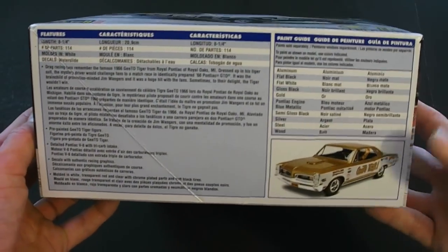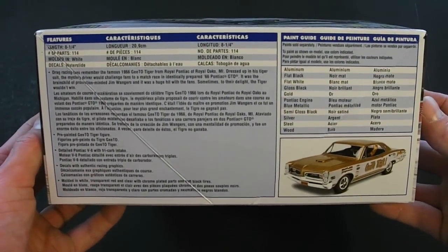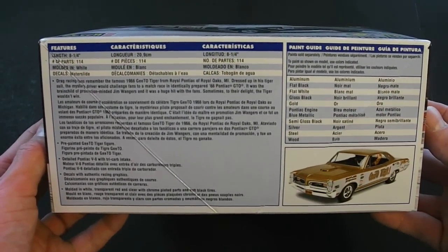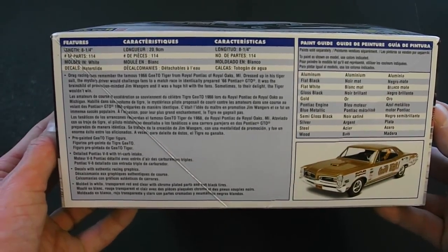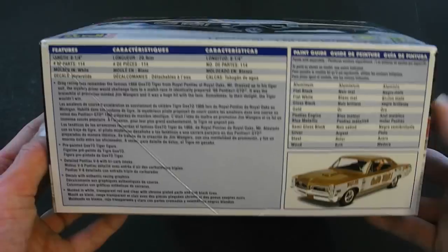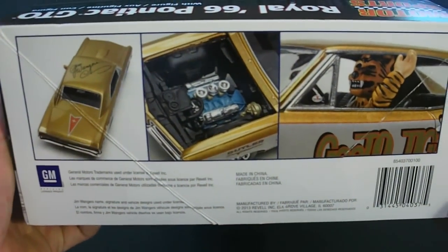And here you can see they have some information, a photo and the paint guide. It's 114 parts, the kit is 8 and 1 quarter inches long, molded in white, you have water slide decals, chrome plated parts, vinyl tires, clear and translucent red parts.